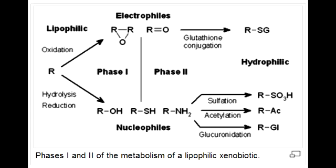Describe all the things that occur in Phase 1 drug metabolism. In Phase 1 of drug metabolism, there is reduction, oxidation, and hydrolysis with cytochrome P450. This usually yields a slightly polar, water-soluble metabolite, which is usually still active.